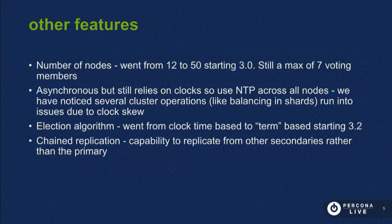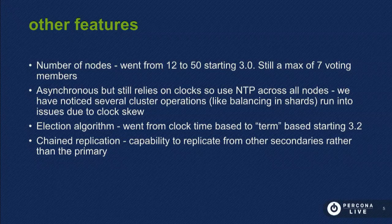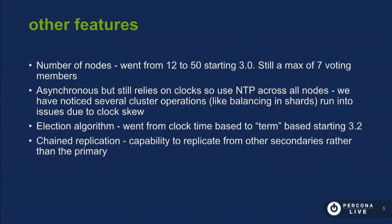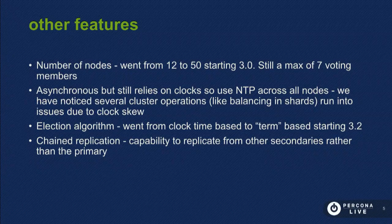Before version 3.0, there were only 12 replication nodes allowed per replica set. Now you can have up to 50, but they retained the seven voting members, meaning for elections and things like that, you still only have seven nodes. That's a sane number so that we're not waiting around for a large quorum for failovers.